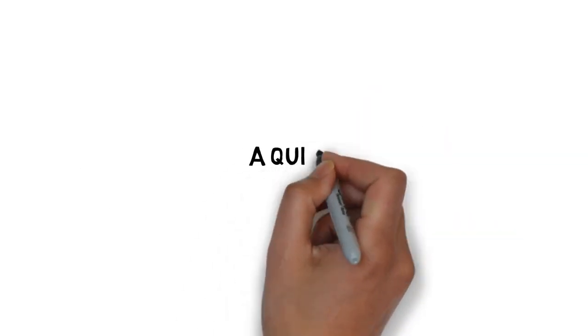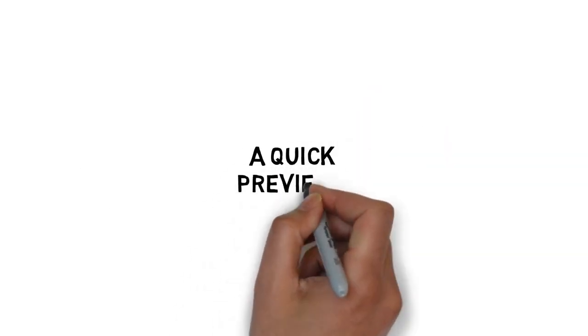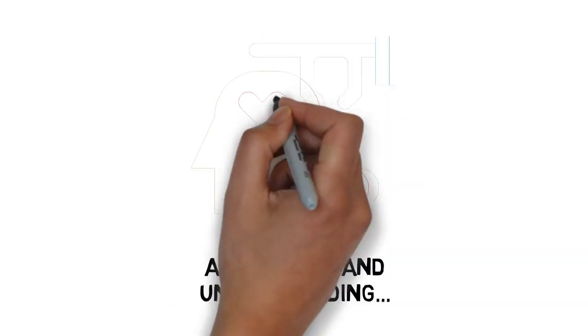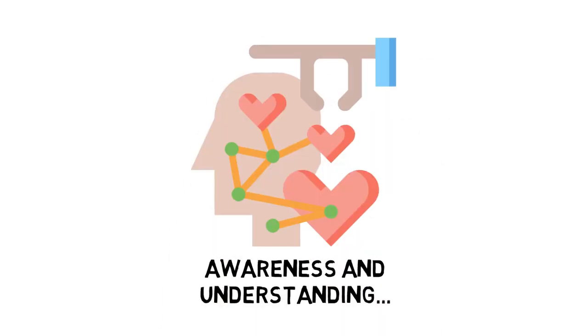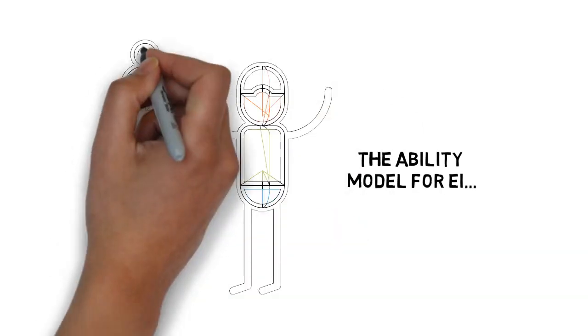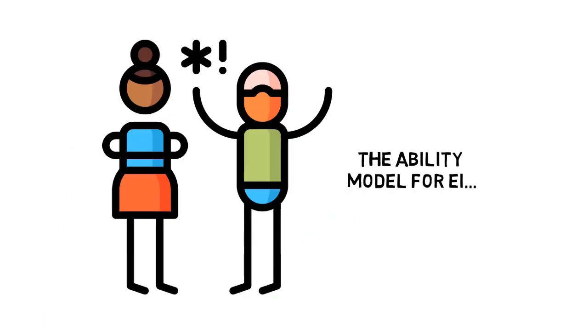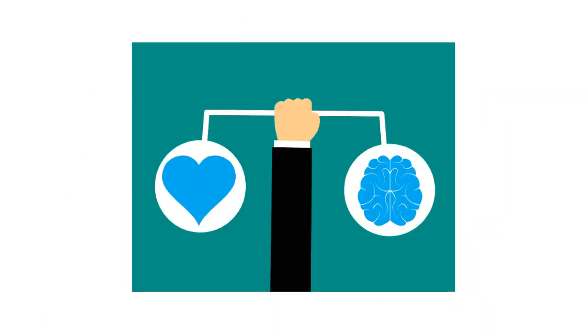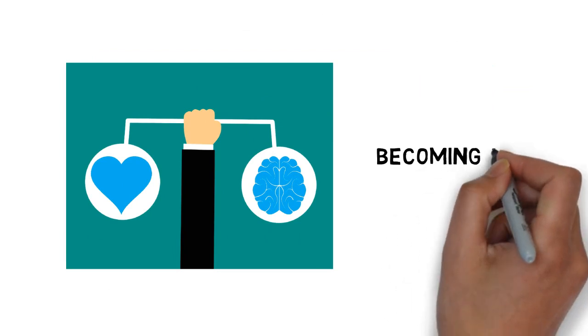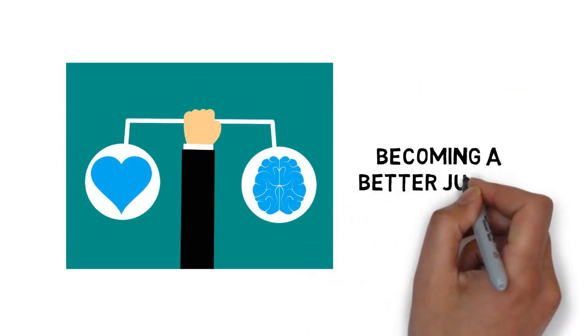Here's just a quick preview of what you'll discover inside: what is emotional intelligence, emotional awareness and emotional understanding, emotional control and empathy, the ability model for EI, understanding the benefits of emotional intelligence, improving your emotional intelligence, and becoming a better judge of others' emotions.